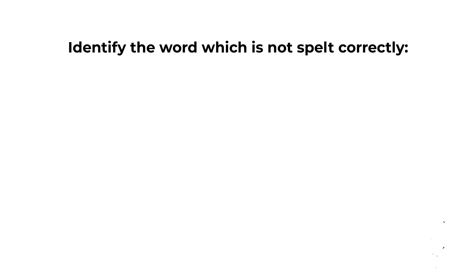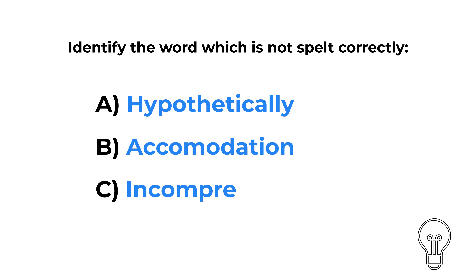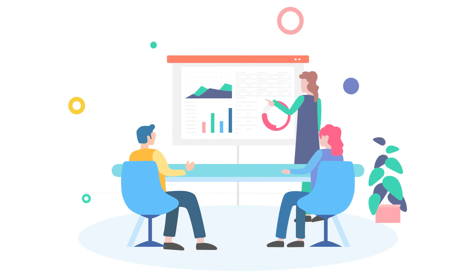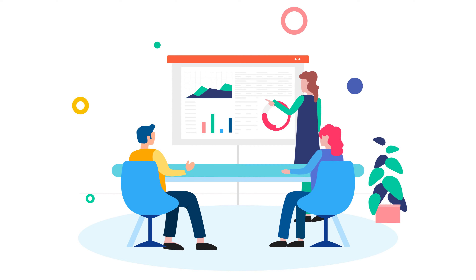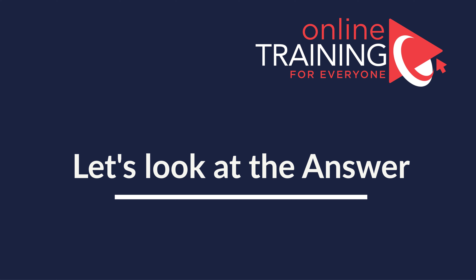Here is a spelling question which we frequently see on the test. You need to identify the word which is not spelled correctly. You are presented with four words: A) hypothetically, B) accommodation, C) incomprehensibilities, D) interdisciplinary. Give yourself a little bit of time to browse through the words and see if you can come up with the correct solution.